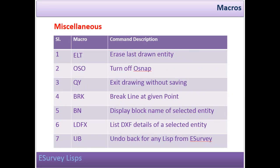Miscellaneous macros: ELT — Erase last drawn entity. OSO — Turn off snap. QY — Exit drawing without saving. BRK — Break line at a given point. BN — Display block name of selected entity. LDXF — List DXF details of a selected entity. UB — Undo back for any list from eSurvey.